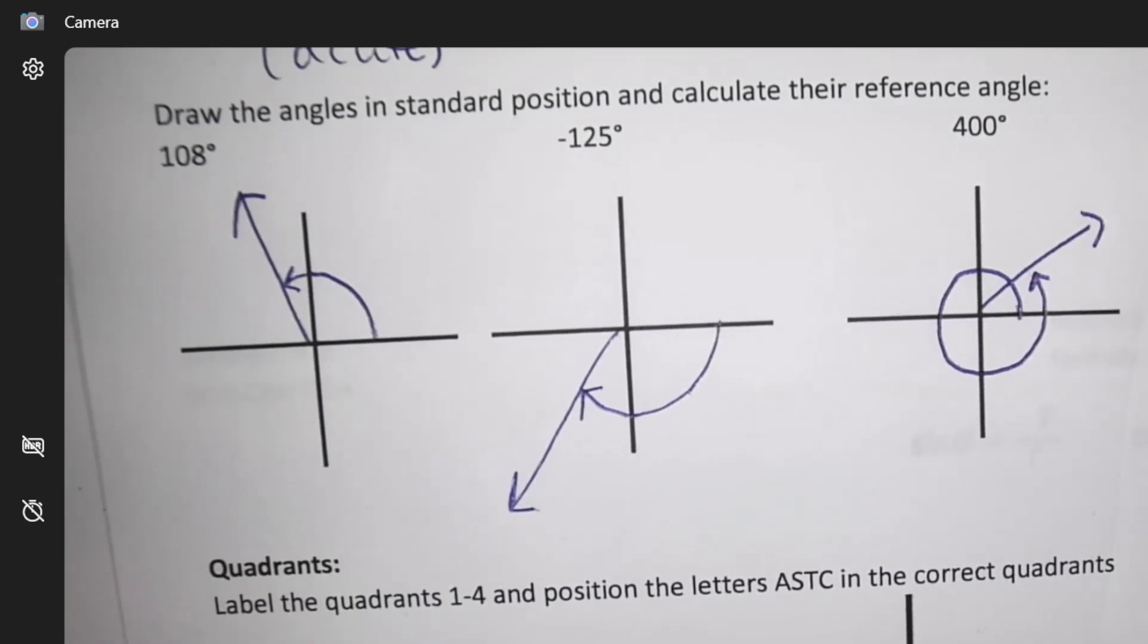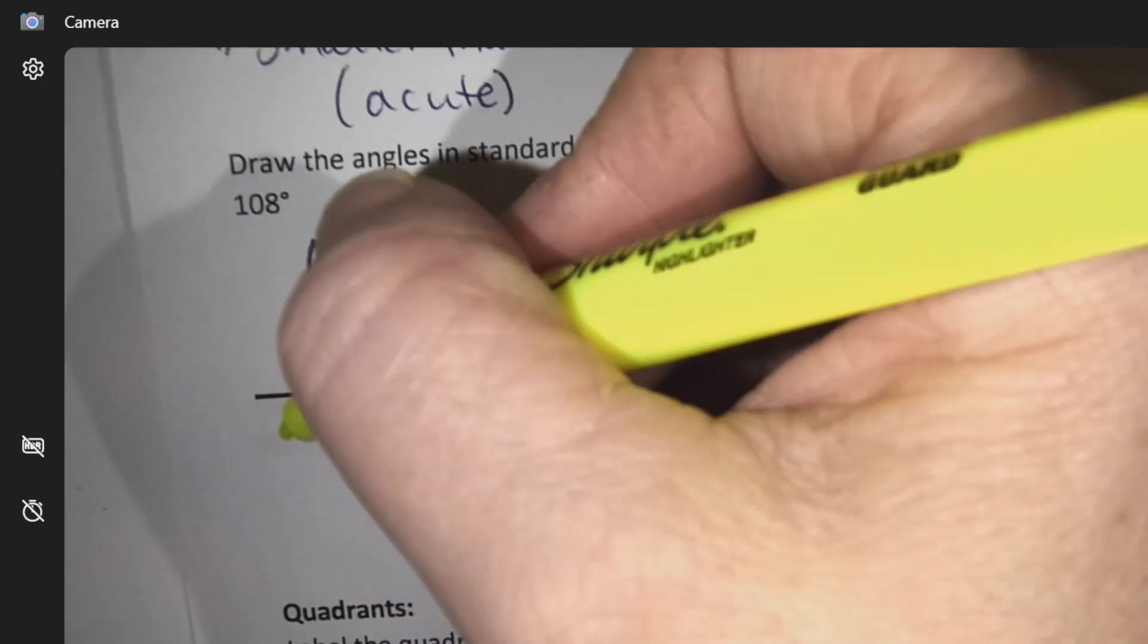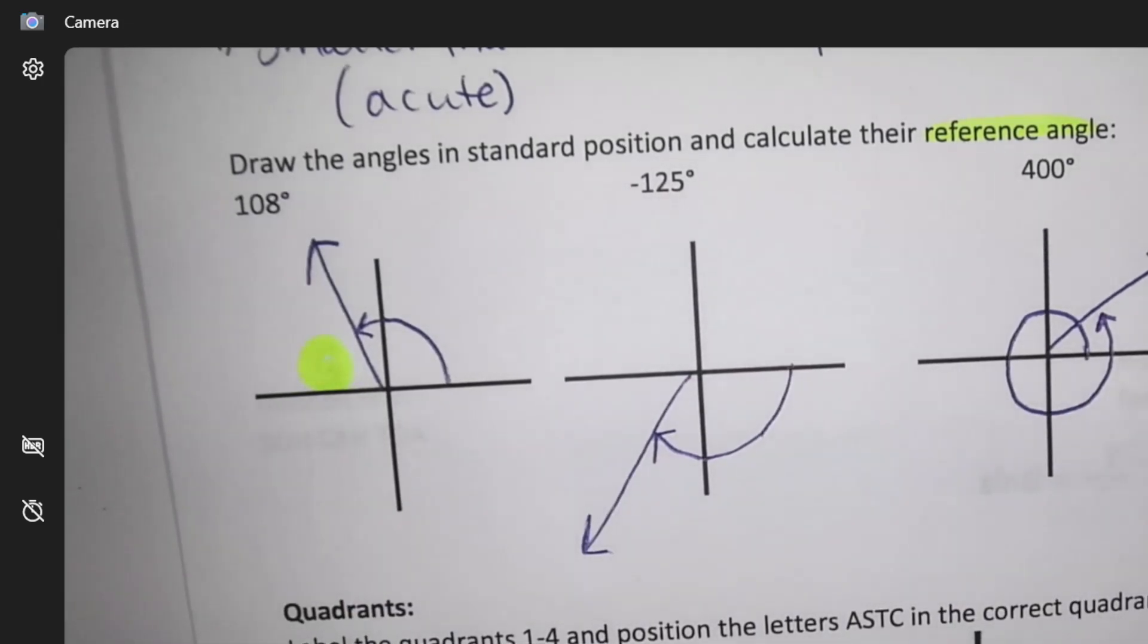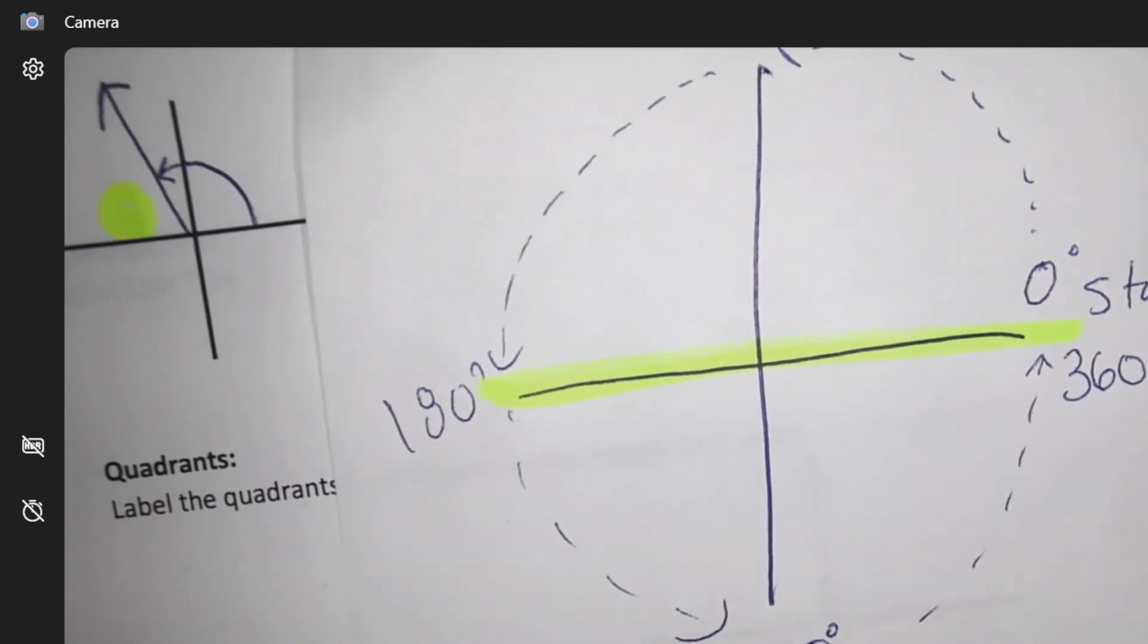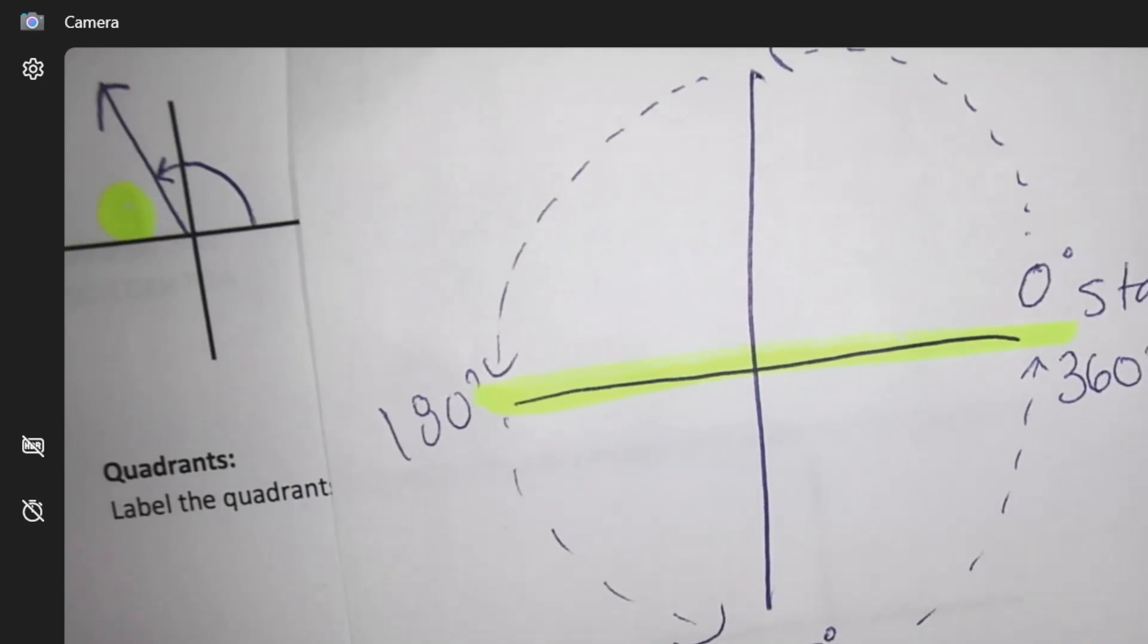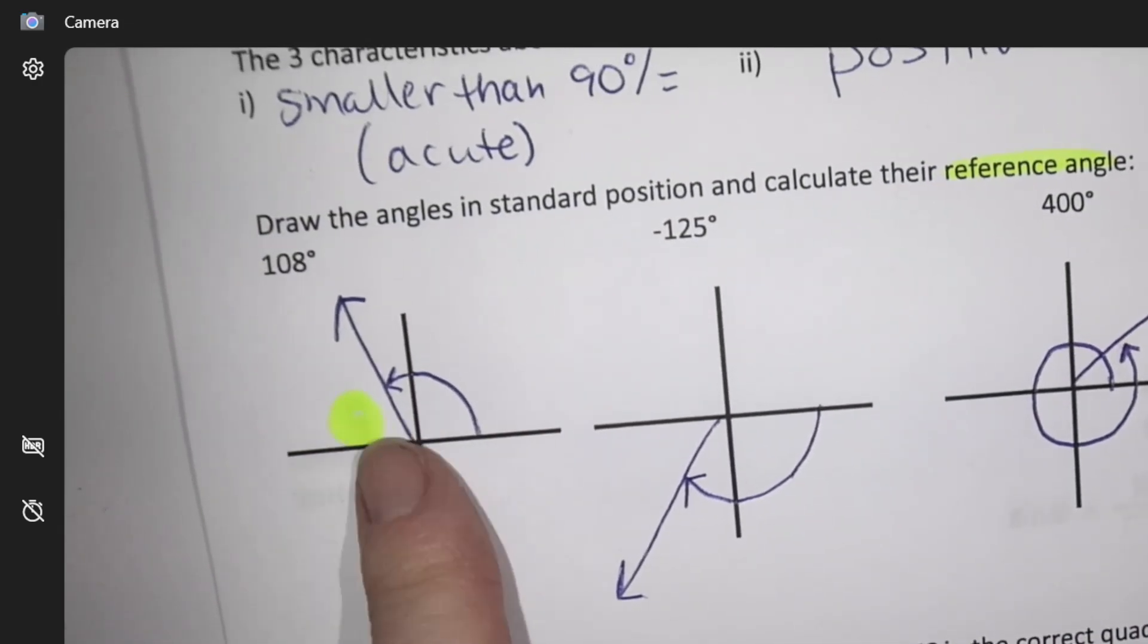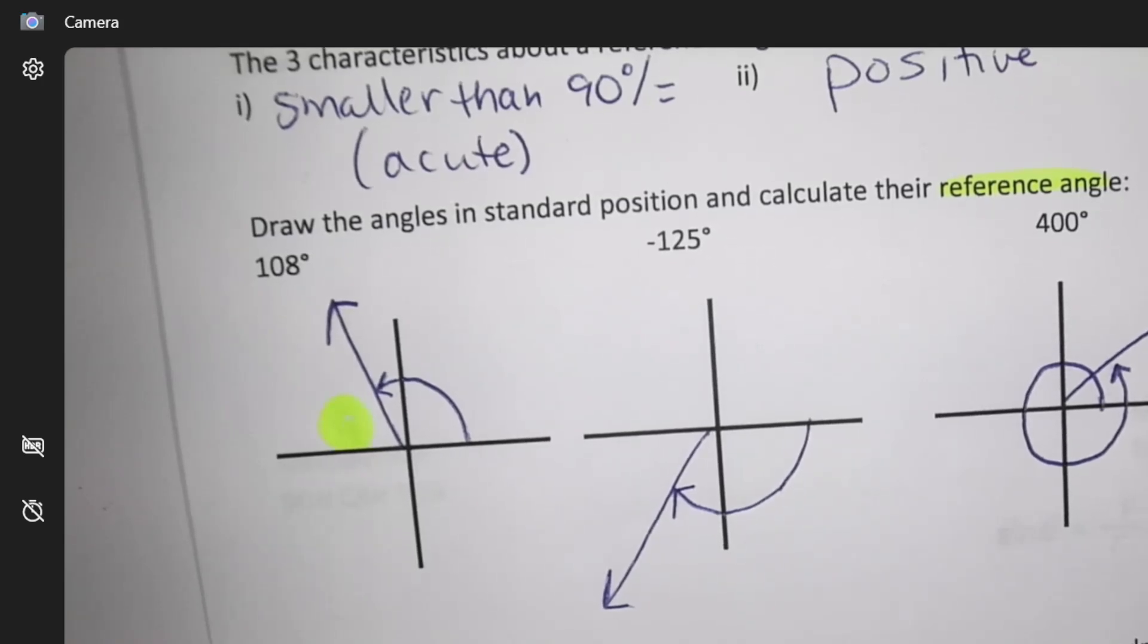Reference angle. The reference says we want the positive distance to the closest x-axis. For question one, this is the closest x-axis. Does everybody know what the x-axis is? This is the x-axis. How far from that axis are you? So I want this space. How much space is there in here?